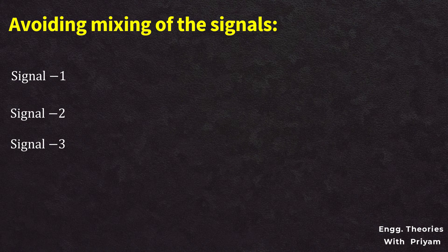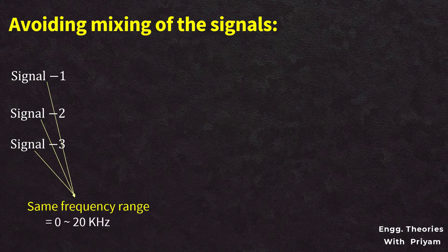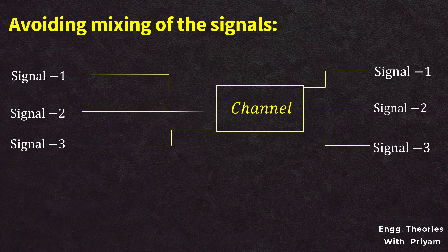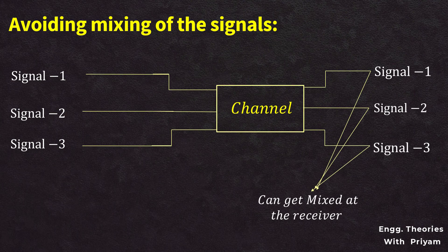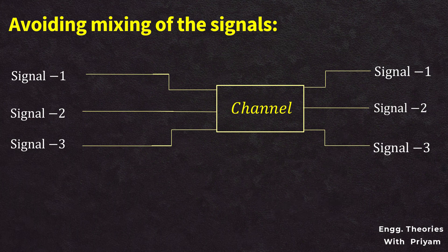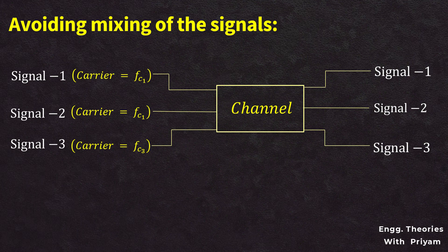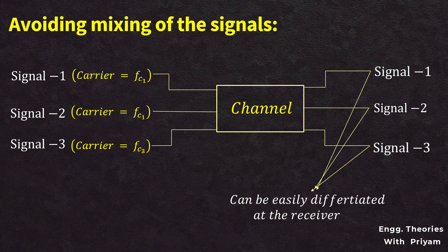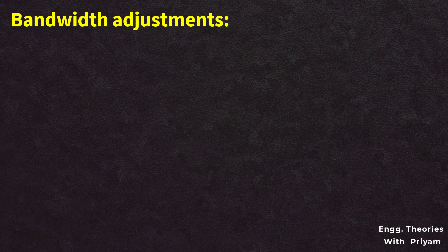Avoidance of mixing of signals: if baseband signals are transmitted without modulation using more than one transmitter, all signals will occupy the same frequency range of 0 to 20 kHz, causing them to mix together. The receiver cannot then separate them. To avoid this, each baseband signal can be used to modulate a different carrier, so the modulated signals occupy different frequency slots (channels), and the receiver can differentiate among the received signals.